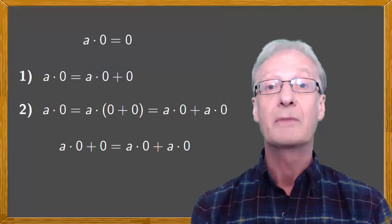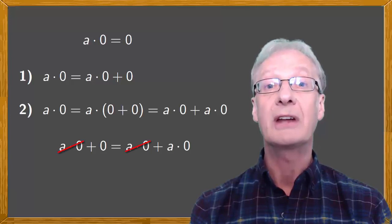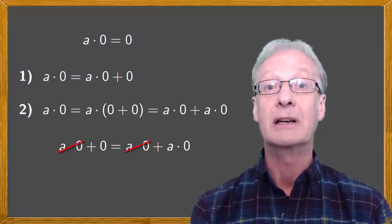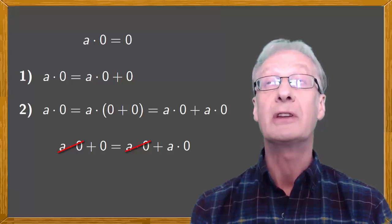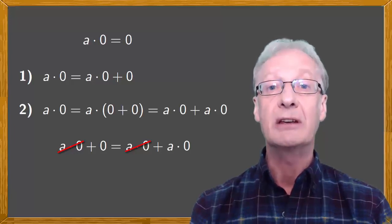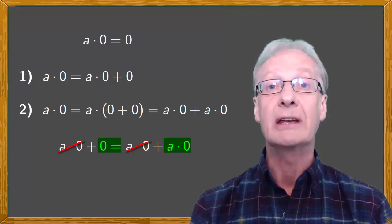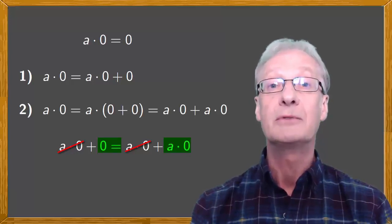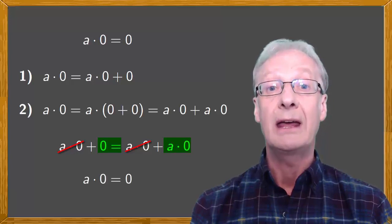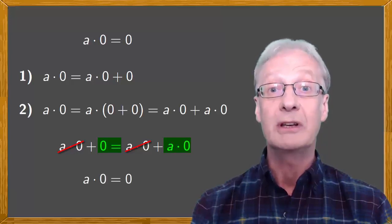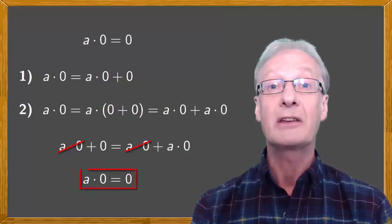Finally, let's simplify the left and right-hand sides. We add the opposite of a multiplied by zero on both sides of the equality to give zero equals a multiplied by zero. Or, turning this around, a multiplied by zero is zero. And there's our result.